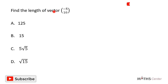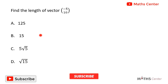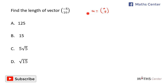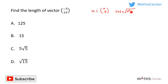Find the length of the vector (−5, 10). This is a multiple choice question. We are going to find the length of this vector. If you have a vector a with components (x, y), the length or magnitude of this vector is equal to the square root of the square of the x component plus the square of the y component.